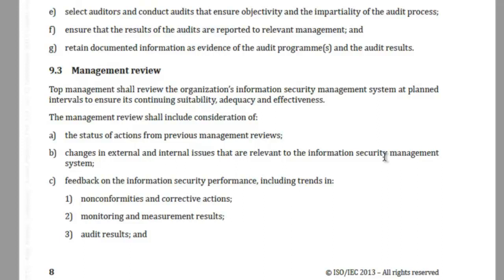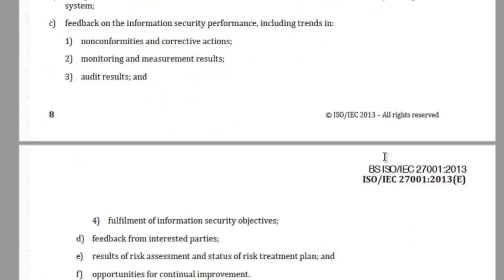Feedback on information security performance about the nonconformities and their subsequent corrective actions must also be considered. Information security objectives must be made part of the consideration for the management review meeting. Moreover, feedback from interested parties, results of the risk assessment and the subsequent risk treatment plan status should also feature as part of the consideration, and finally the opportunities for continual improvement for information security must also be looked at.